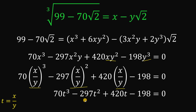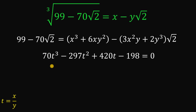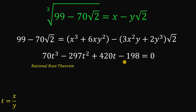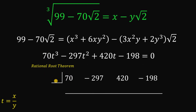We now have a cubic equation in terms of t. Our goal is to find the real value of t — and since x and y are real numbers, t is real as well. Rather than using the Cardano method, we apply the rational root theorem. The possible rational roots are factors of 198 over factors of 70, and from among those candidates we identify the correct answer.